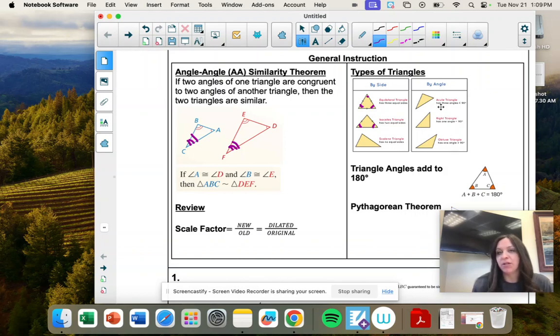So remember different types of angles. An acute triangle, they're all less than 90, all their angles. A right triangle has one angle at 90 degrees. And the other two add to 90.